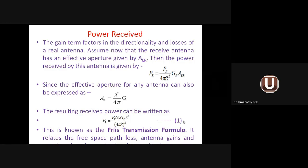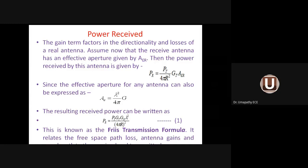The Friis transmission formula is an expression relating received power to transmitted power, gain of both antennas, wavelength λ, and distance R between transmitter and receiver. It relates free space path loss, antenna gain, and wavelength.